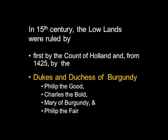Before they acquired the territory, in the late 14th century, there was Philip the Bold. His son was Jean, or John the Fearless, who was murdered by the French. Then his son, Philip the Good, added the lowlands to the territories of the Dukes of Burgundy.